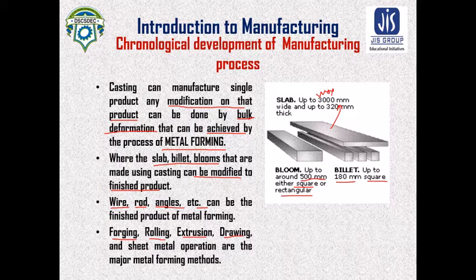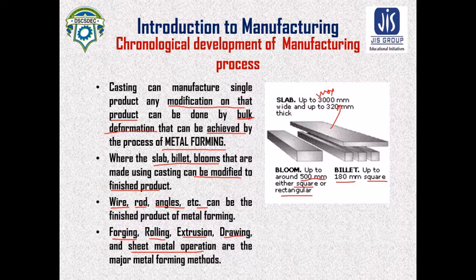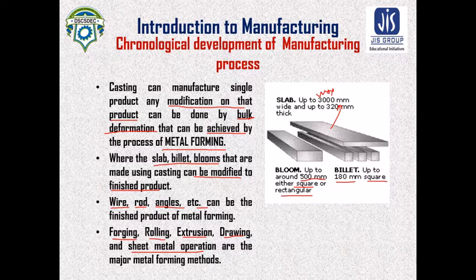The major metal forming processes are forging, rolling, extrusion, drawing, and sheet metal operations. Details of these operations will be taught later in this course.